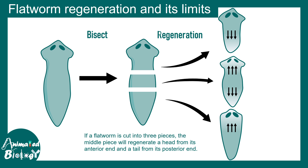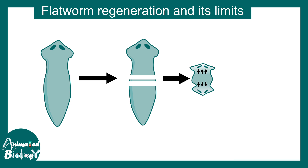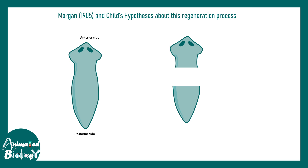The middle segment also has the capability to regenerate into an entire planaria — isn't that fascinating? But beyond the regenerative potential itself, there is the question of precision: how does a cut segment from the middle know where to make the head and where to make the tail? This puzzling question has been bothering scientists for decades. One interesting clue came from experiments where a very thin middle segment showed faulty regeneration.